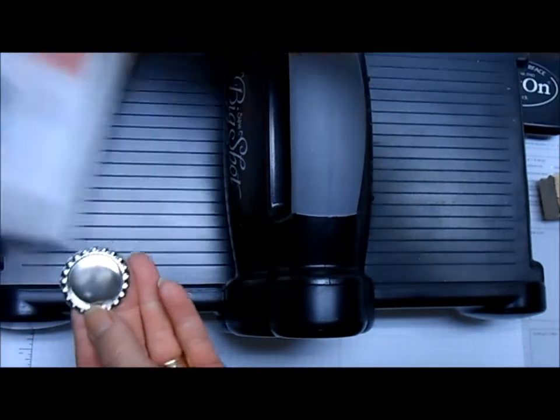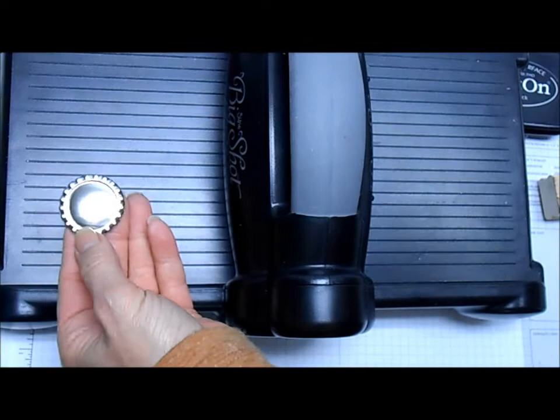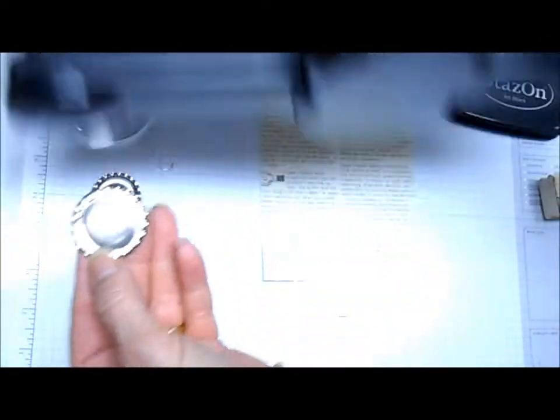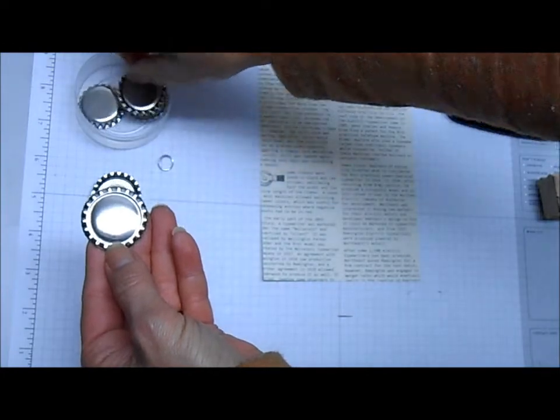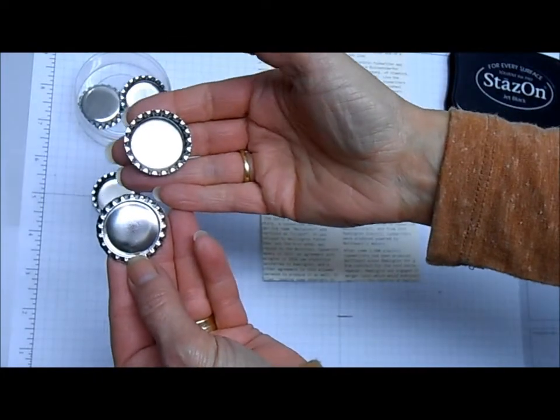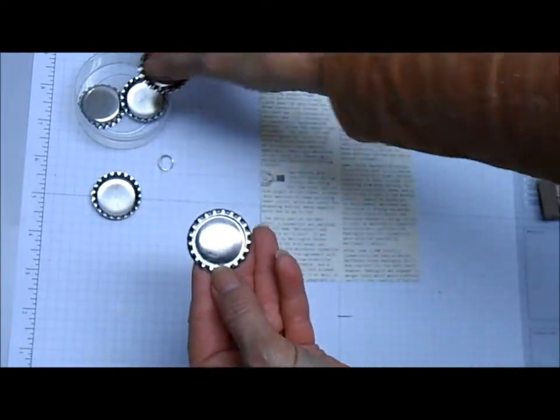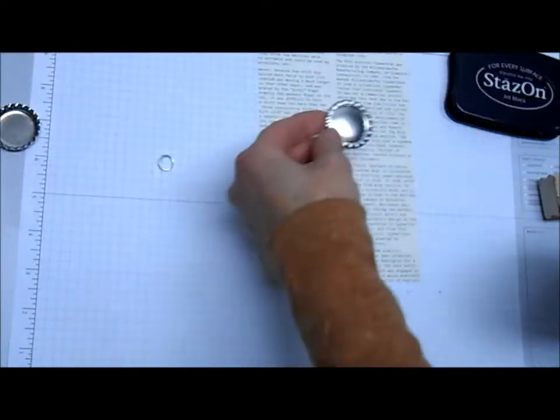And it really doesn't take much effort to do that. In fact, I did these a few weeks ago with 14 Girl Scouts, and they did a great job doing these on their own. So now you can see that it flattened out the sharp edge. So you can see going from the sharp one to the flat one.